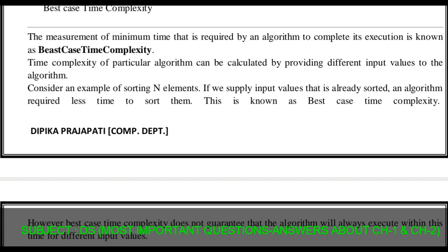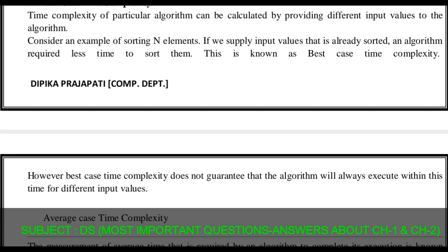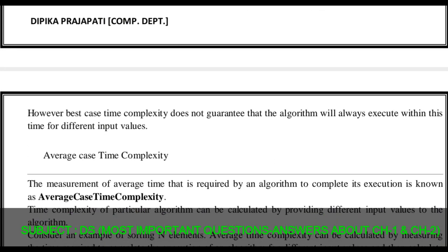Best case time complexity is the measurement of minimum time that is required by an algorithm to complete its execution. The time complexity of a particular algorithm can be calculated by providing different input values to the algorithm. Consider the example of sorting elements — if we supply input values that are already sorted, the algorithm requires less time to sort them. That is known as best case time complexity.